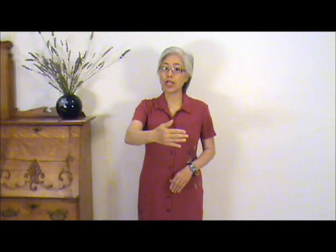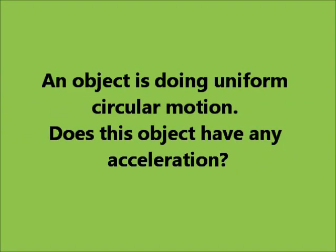Let's first consider an object that is doing uniform circular motion. Uniform here means the object's speed is constant. So this object is going around the circle at a constant speed. Do you think it has any acceleration? Remember that the definition for average acceleration is the change in velocity divided by the change in time. If a velocity changes, there is acceleration.